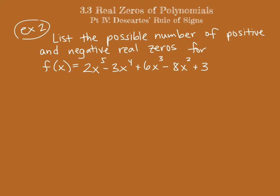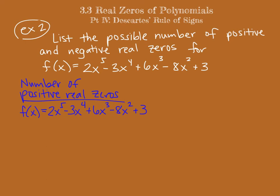In our second example, we want to again find the possible number of both positive and negative real zeros using Descartes' rule of signs. The first thing we need to do is count the sign changes in f(x) to find the possible number of positive real zeros. Rewriting f(x) and counting sign changes: positive to negative — one sign change; negative to positive — another; positive to negative; negative to positive. We have four sign changes, so capital P = 4.